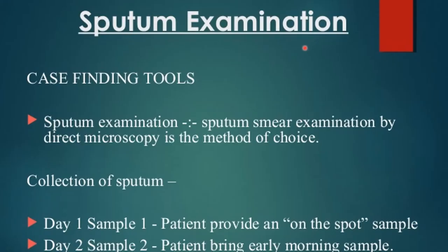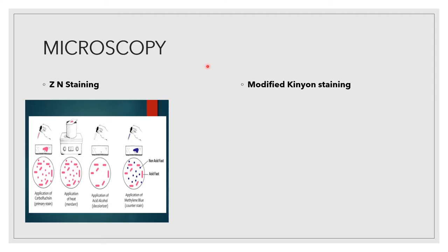Sputum examination by direct microscopy is the gold standard method of diagnosing tuberculosis and can be done at the level of PHC and CHC. On day 1, a spot sample is taken as soon as the patient is diagnosed clinically. On day 2, the patient brings an early morning sputum sample, as the chances of recovery of tubercle bacilli from early morning samples are higher.